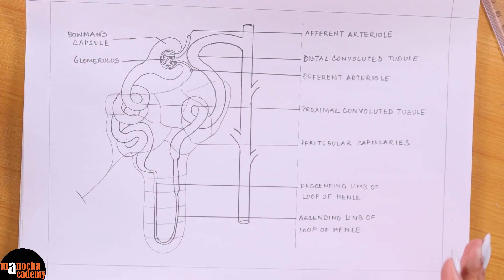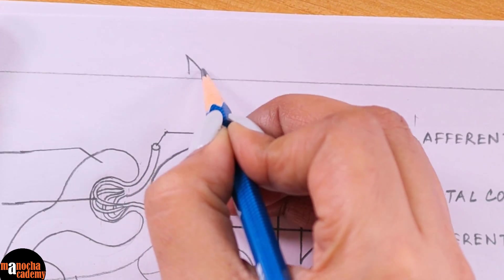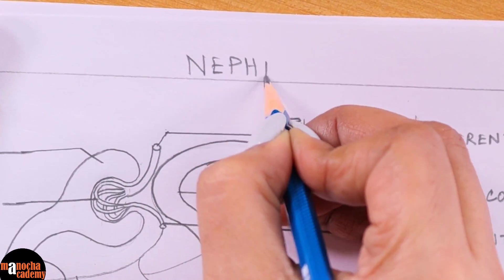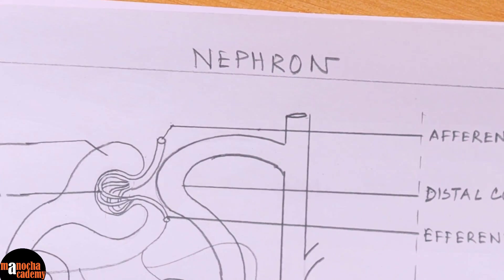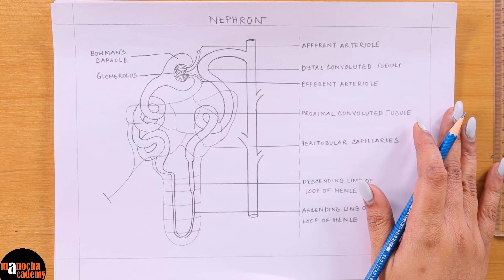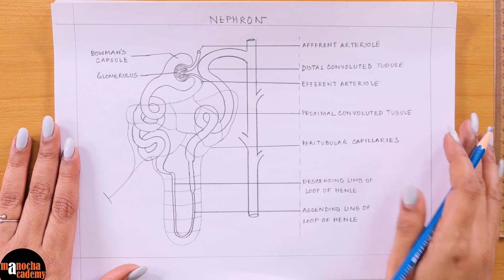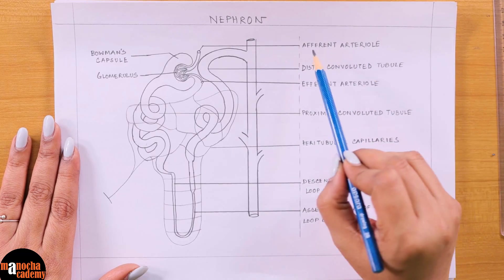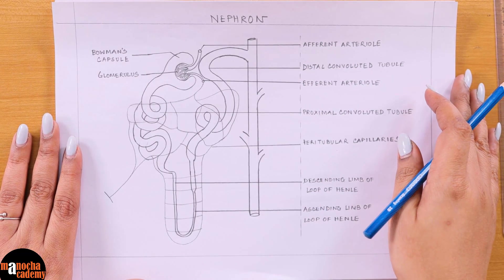That is the diagram of the nephron. Do not forget to give a heading to the diagram whenever you draw it. Label on the right-hand side as much as possible and label in block letters so that your labeling is neat and clear.